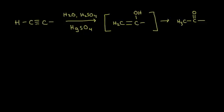Let's look at the hydration of alkynes. We're going to start with a terminal alkyne — there's a hydrogen on one side and an alkyl group bonded to the carbon on the other side. We're going to add water, sulfuric acid, and mercury(II) sulfate to our alkyne. We're going to hydrate it.